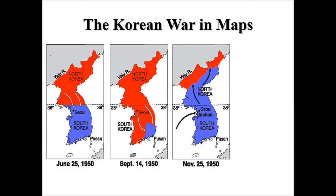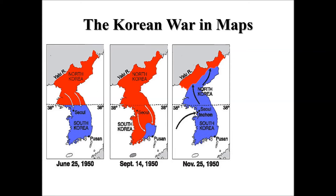In the end, China intervened and stopped South Korea from gaining more land, and the border got back to the 38th parallel — well, at least almost. Like you can see, it was a real back and forth.